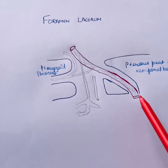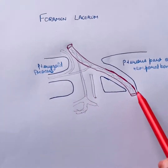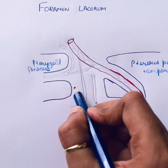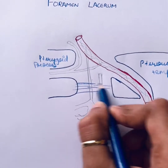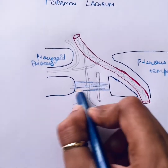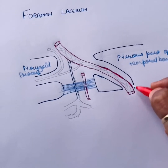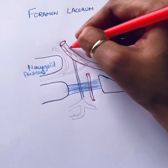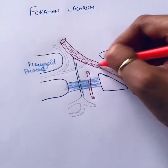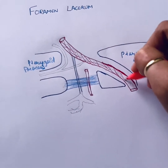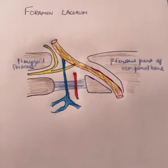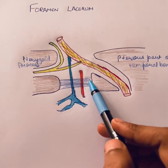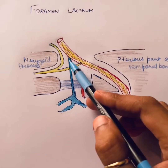When we view superiorly we can only find a single canal, but when we view inferiorly we can appreciate two different canals. During life, the lower part of the foramen lacerum is filled with cartilage. This is the carotid canal, through which the internal carotid artery and the sympathetic plexus pass.